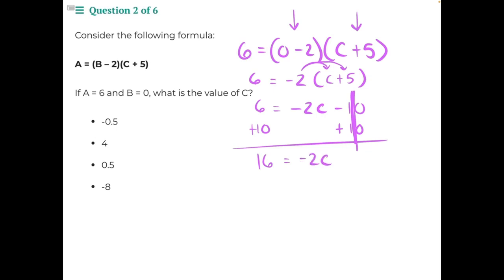Negative 2 is being multiplied to C, so the opposite operation here is division. Divide both sides by negative 2.